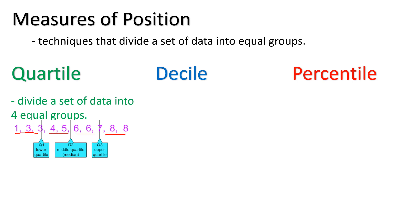As you notice, the cuts are the ones that we call quartile. We have the first cut, known as quartile 1; the second cut, quartile 2; and the third cut, up to quartile 3. So even if we have four equal groups, the number of cuts needed is only 3, so we only go up to quartile 3.